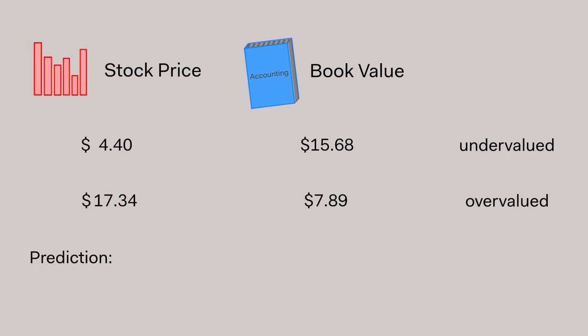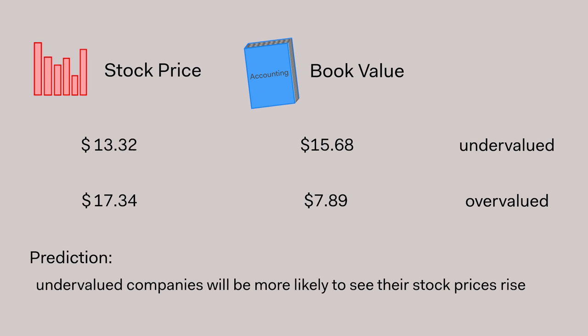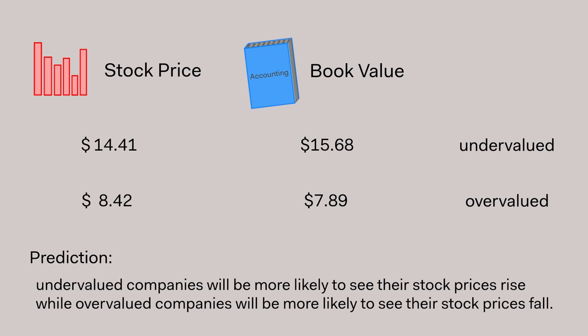I could use that to predict that investors will figure this out eventually, and undervalued companies will be more likely to see their stock prices rise over the next week or quarter, while overvalued companies would more likely see their stock prices fall. If I validate this hypothesis, I can incorporate this new signal into my model and expect to improve the quality of my predictions.